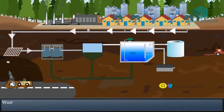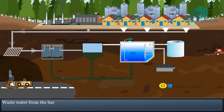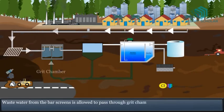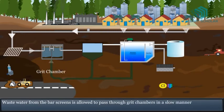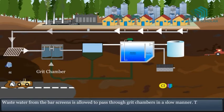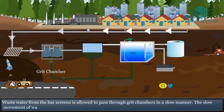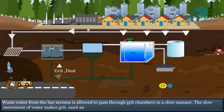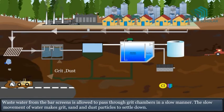Step 2: The grid chamber. Wastewater from the bar screens is allowed to pass through grid chambers in a slow manner. The slow movement of water makes grit, sand and dust particles settle down.